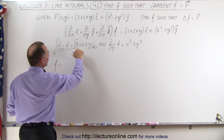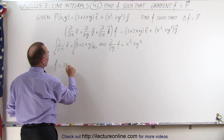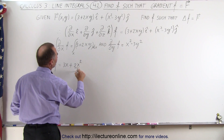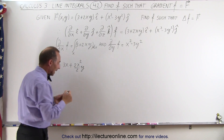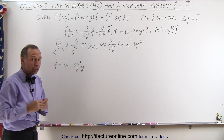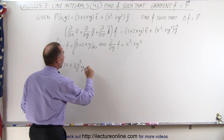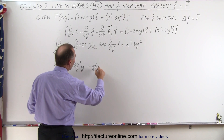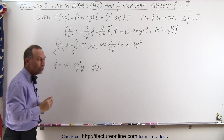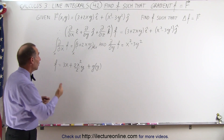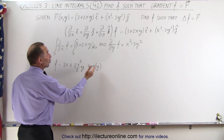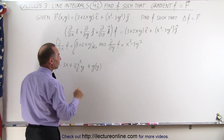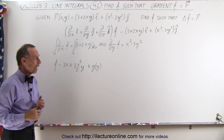The partial derivative of this with respect to x gives us back the function, and that will equal 3x plus 2x squared divided by 2 times y, which simplifies. We should also add a potential function, let's call it g of y — a function that is only a function of y — because if we take the derivative of this with respect to x it will simply go away since it acts like a constant, so we have to account for that.